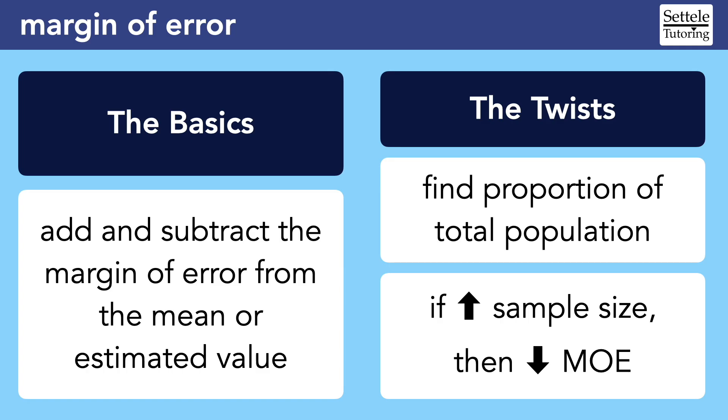Occasionally, we might be asked a slightly more conceptual fact about margin of error, comparing the margins of two different surveys. Essentially, if you increase the sample size, then you decrease the margin of error. In other words, if you survey more people, you are going to get a more accurate result.